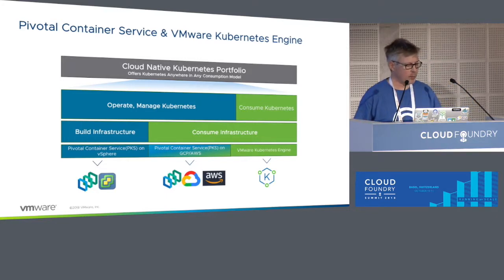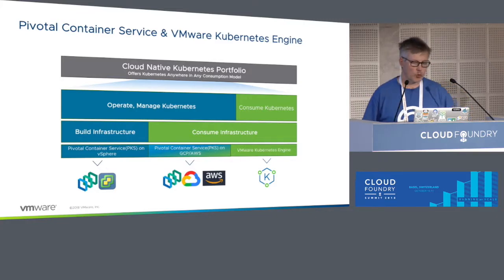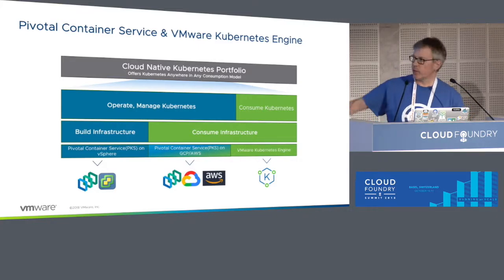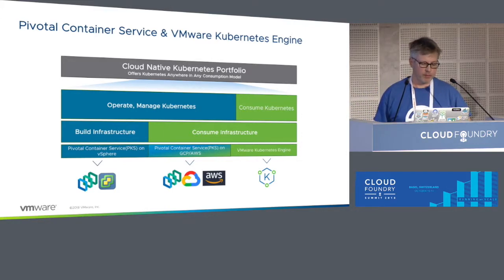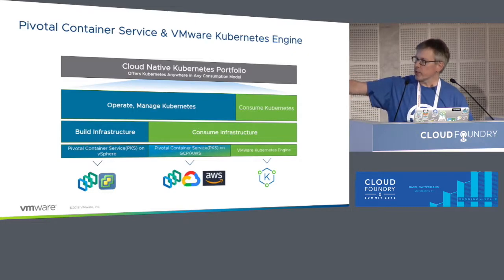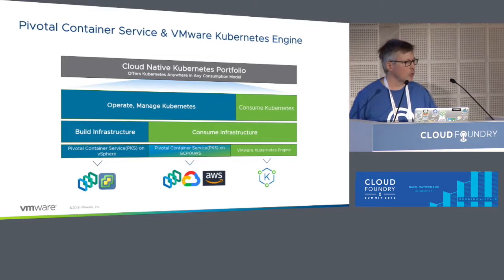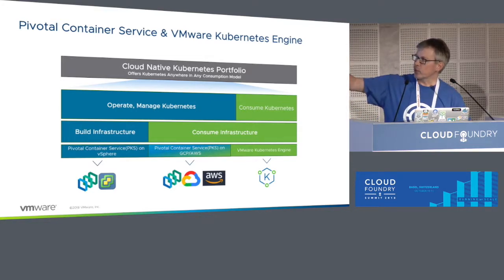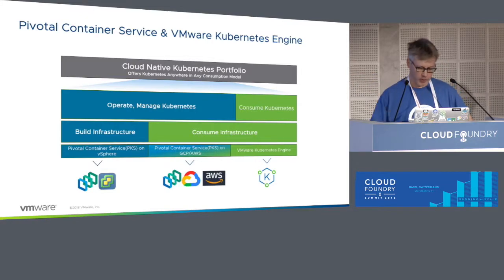The second one is Pivotal Container Service, which is a collaboration of VMware, Pivotal, and also Google at some places. As you see at the bottom left, you have it running on vSphere with all the integration — NSX-T, vSAN, vSphere. You can also run it in the cloud on AWS, Google Cloud Platform, and soon also on Azure, but you still manage it on your own. You consume infrastructure rather than build it yourself, but you still operate Kubernetes on your own using a framework like PKS.